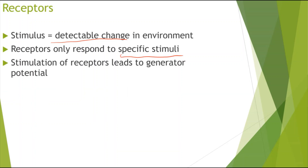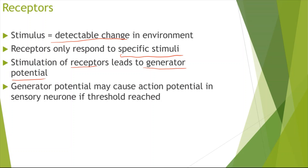You need to know that stimulation of receptors can lead to a generator potential — basically a change in the charges of membranes, so it could become more positive or more negative. A generator potential can cause an action potential in the sensory neuron if the threshold is reached. The action potential will become more clear when we go through the nervous system topic.